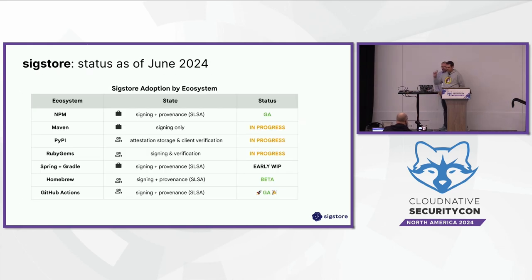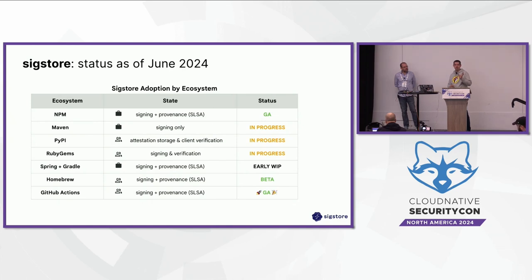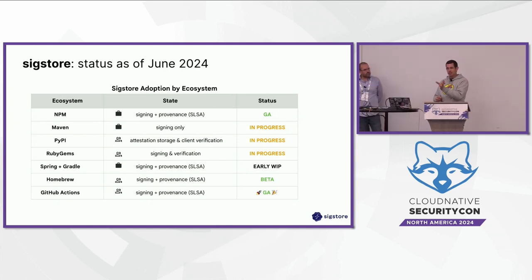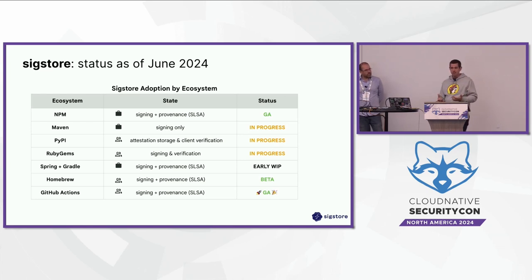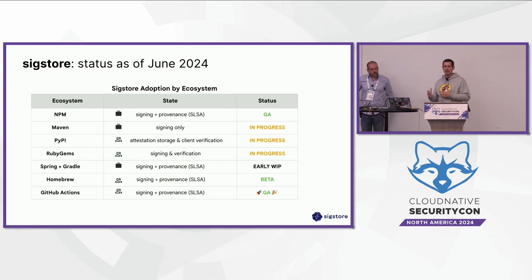When we talk about signing in the supply chain, people tend to think of the artifact itself — the binary or tarball downloaded. But there are actually a lot of other things you might want to sign as well. Build provenance is a key one: having a strong cryptographic link between the source that went into building something, the actual build workflow that generates the output binary, and then the binary itself. It's not just the blob at the end — it could be signing the SBOM you pass along to users. All metadata flowing throughout the supply chain needs the properties a digital signature gives: identity, non-repudiation, and integrity.